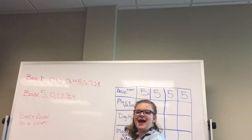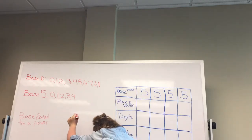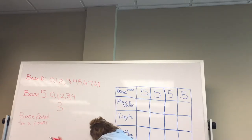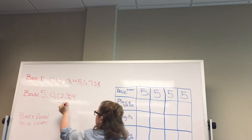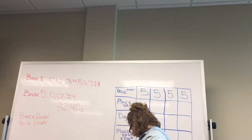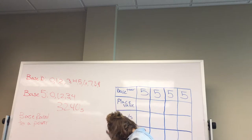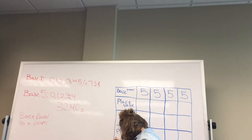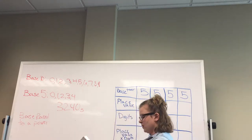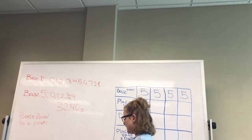Base five has a notation that looks like this. The little five is called the subscript and it tells us what base we are using. We are only using base five today because base 10 does not have a subscript.